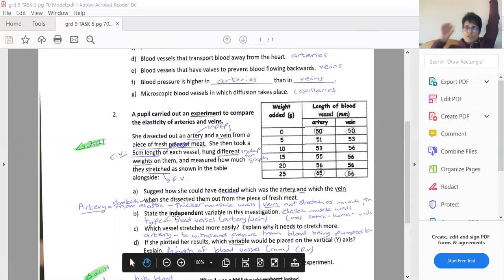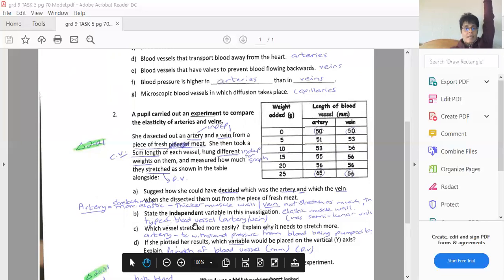Okay. So the independent variable in this whole investigation, okay, the type of blood vessel, artery or vein.